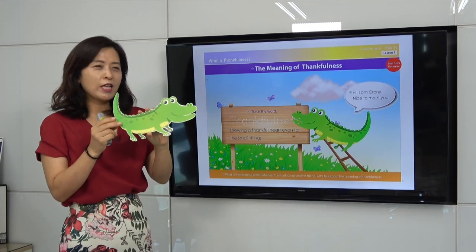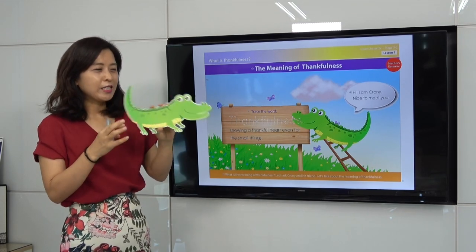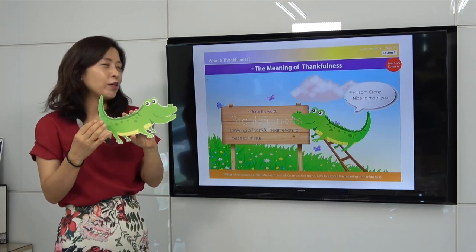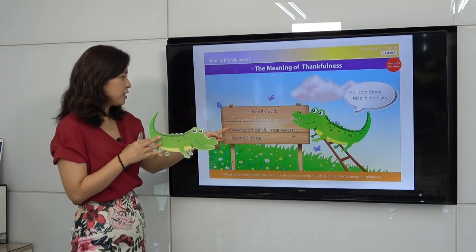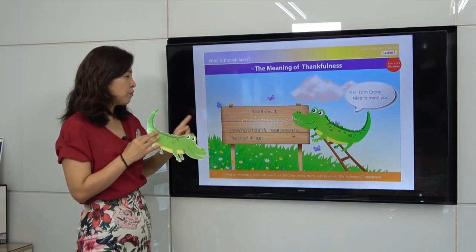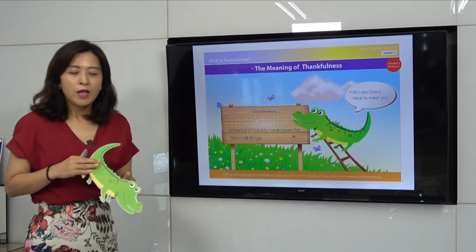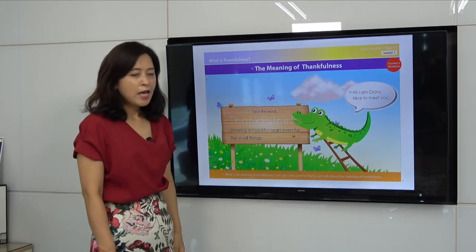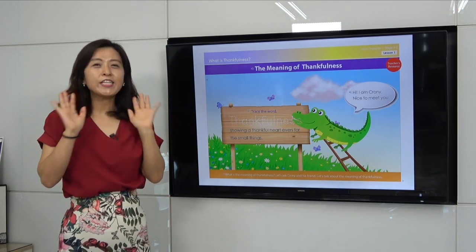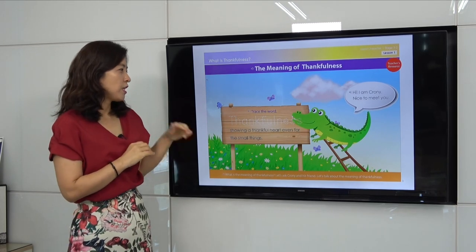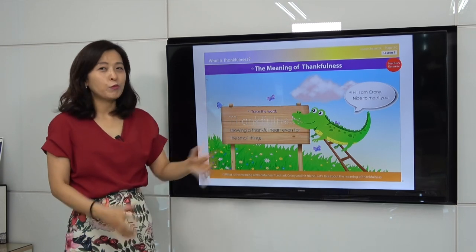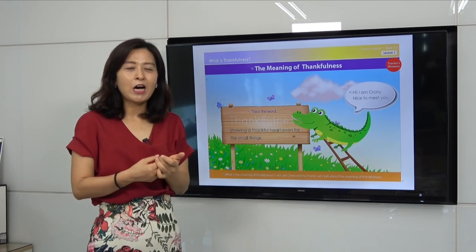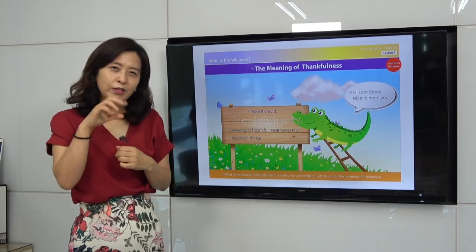You can introduce the character like this: 'Hi, I am Cloney, nice to meet you!' This is like their friend. You can change your voice — 'Hi, I am Cloney, nice to meet you!' — it sounds like a little boy. He will introduce the definition of thankfulness: 'Showing a thankful heart even for the small thing.' This is the definition. I recommend you memorize it, and for little learners, why don't you make your own actions so they understand each word more deeply.